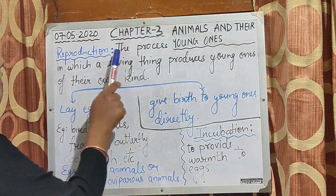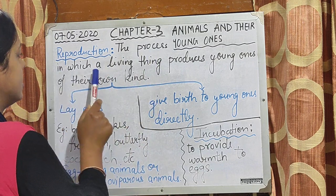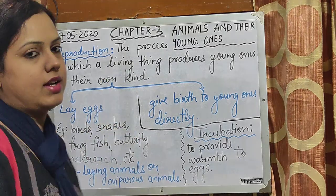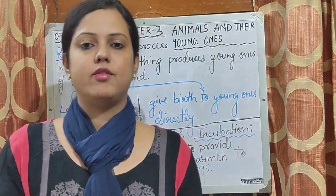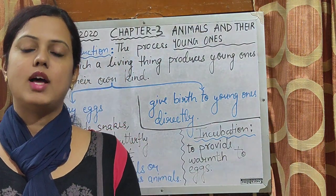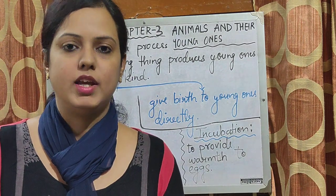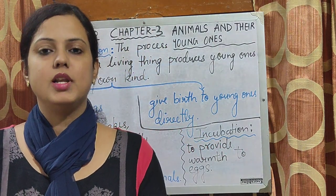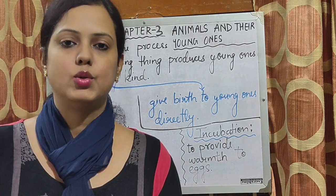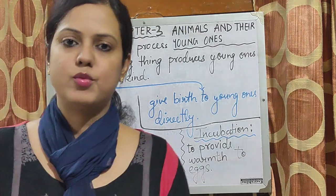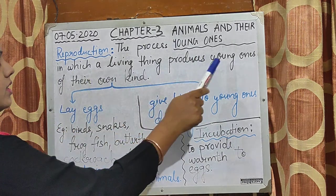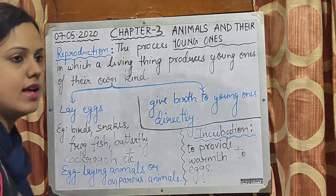So what is reproduction? Reproduction is the process in which a living thing produces young ones of their own kind. The process in which a living being produces young ones of their own kind is known as reproduction.